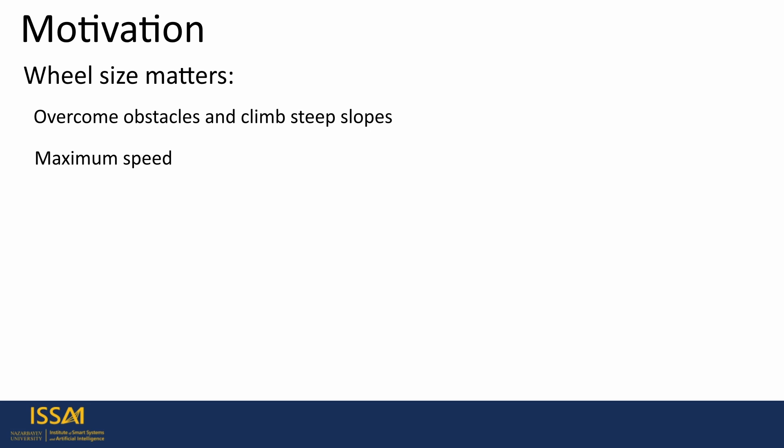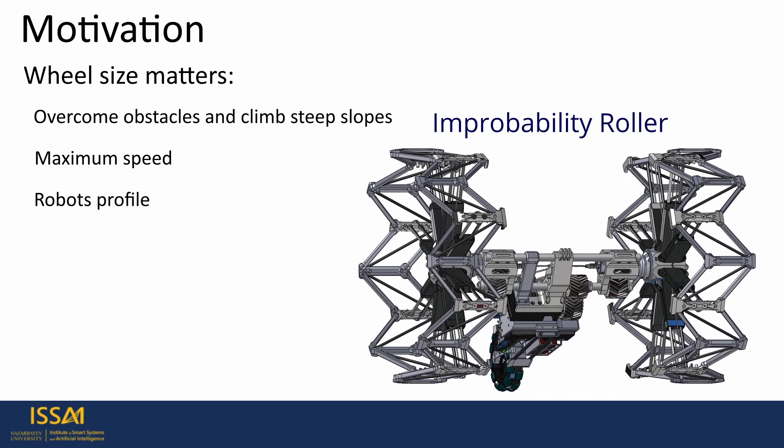The wheel size also affects the maximum speed and robot profile, which can help it navigate in confined areas. Targeting this key feature, we introduce the Improbability Roller.